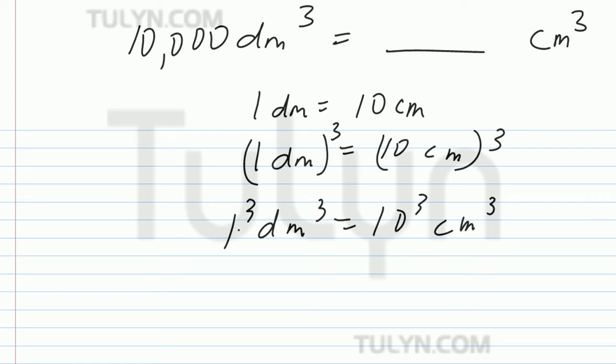Everything's to the third power. So, 1 to the third power is 1 decimeters cubed equals 10 times 10 times 10 is 1,000 centimeters cubed.